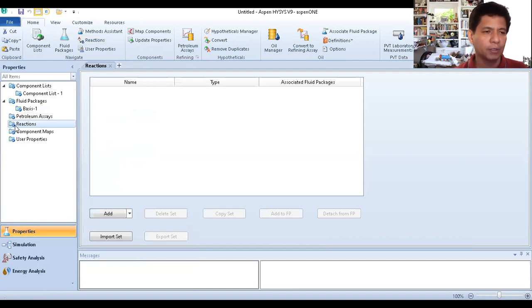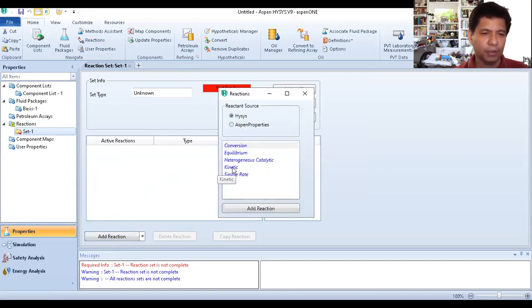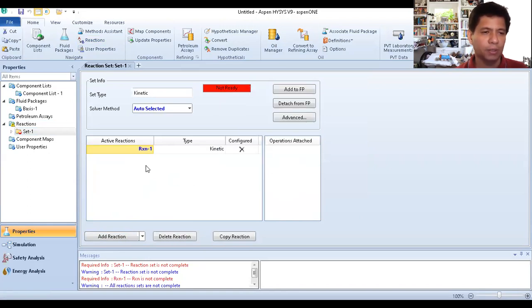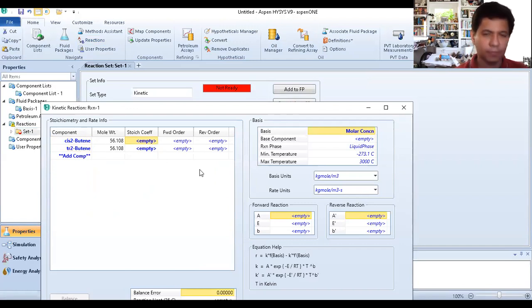Since we have a reaction, we're going to add the reaction. Click add reaction, then another add, kinetic, then another add reaction. You can close this. Then double-click reaction one. Our components are cis-2-butene and trans-2-butene. Since cis-2-butene is the reactant, its stoichiometric coefficient is negative one. Trans-2-butene is the product, so positive one.